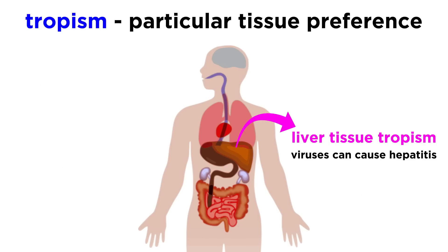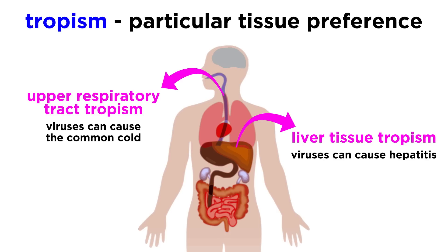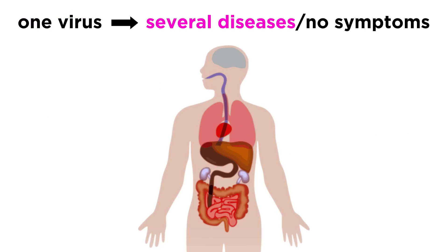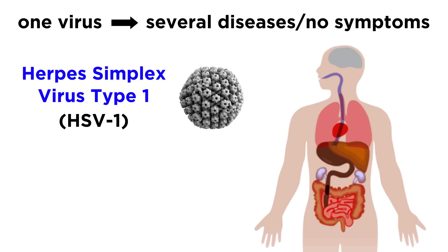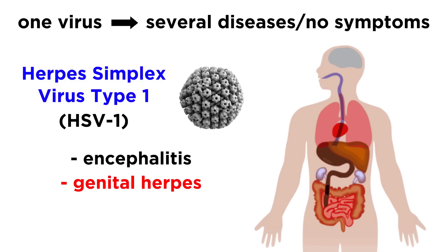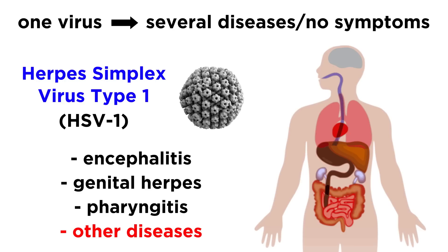For instance, viruses with a liver tissue tropism can cause hepatitis, or those with a tropism for upper respiratory tract tissue can cause the common cold. On the other hand, one virus might cause several different diseases, or no observable symptoms at all. An example of this is herpes simplex virus, or HSV, type 1. This virus can cause encephalitis, genital herpes, pharyngitis, or several other diseases depending on what kind of tissue it infects.